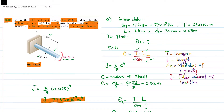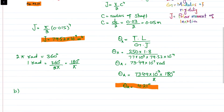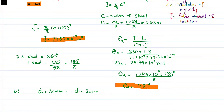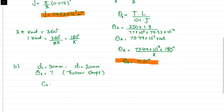Now moving to part B: we assume the shaft is hollow with outer diameter d2 = 30 mm and inner diameter d1 = 20 mm. We need to find the angle of twist at point A for the hollow shaft. All other data — torque, length, and G — remain the same.